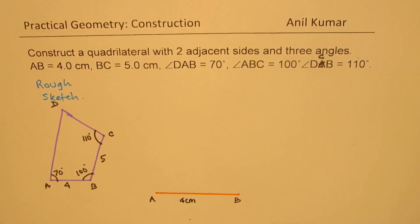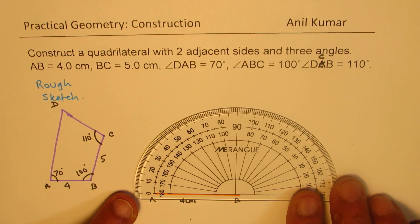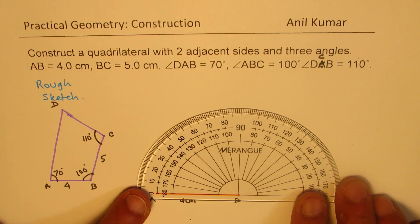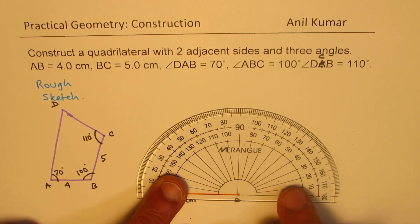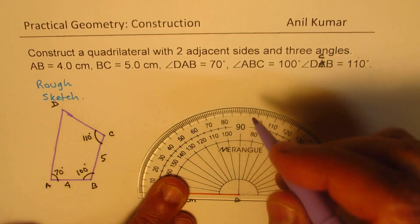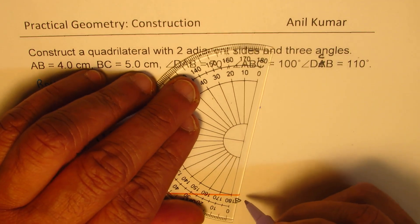Now at B, we have to make an angle of 100 degrees. So we can use the protractor to make 100 degrees, which is the angle right there. So we can join and extend this line.